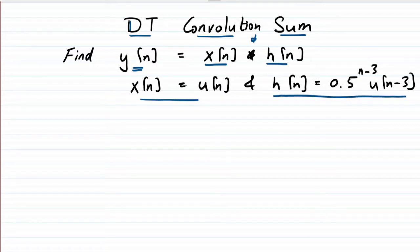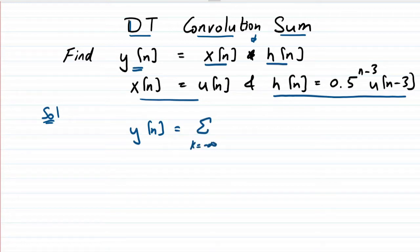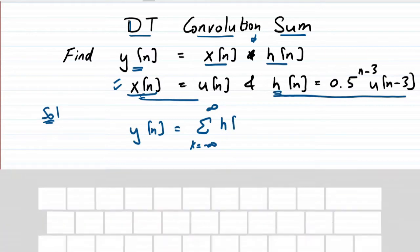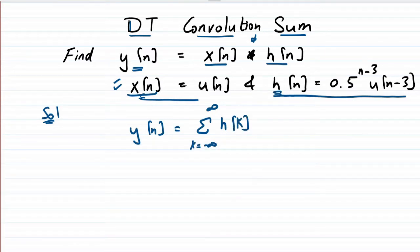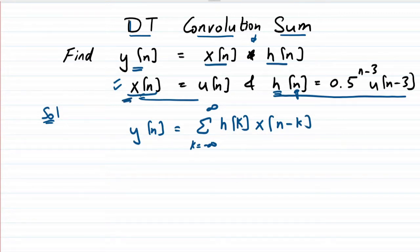Let us first define the convolution sum. We have y(n) as a summation from minus infinity to infinity. We keep one signal as is and flip the other. Since x(n) is simpler, we flip x(n) rather than h(n). So we have h(k) and x(n-k) — that is, the flipped and shifted version of the input. This is our convolution sum.